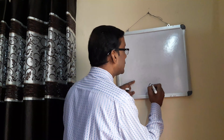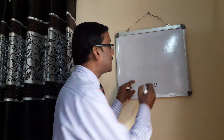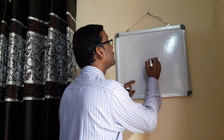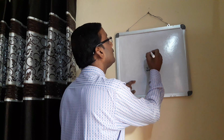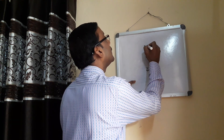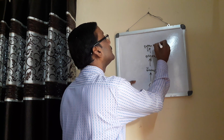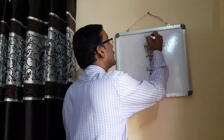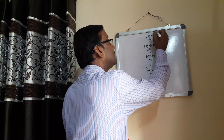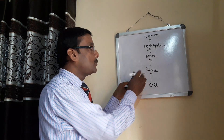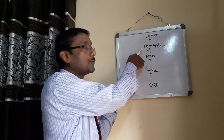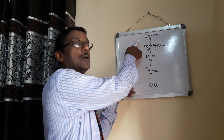The smallest part of a living thing is the cell. A group of cells join together to form a tissue. A group of similar tissues join together to form an organ. Many organs join together to form an organ system. Many organ systems coordinate together to form an organism.